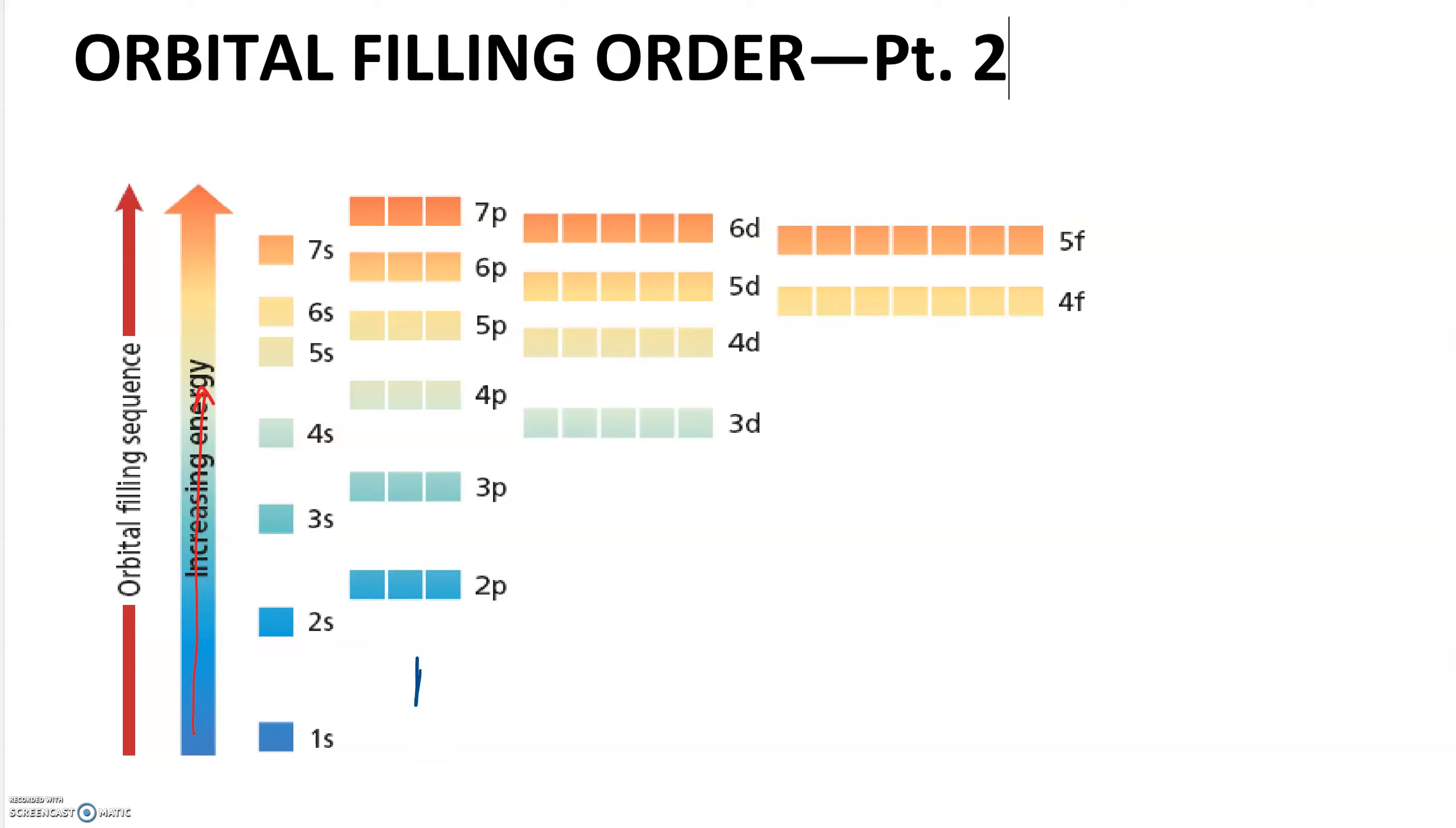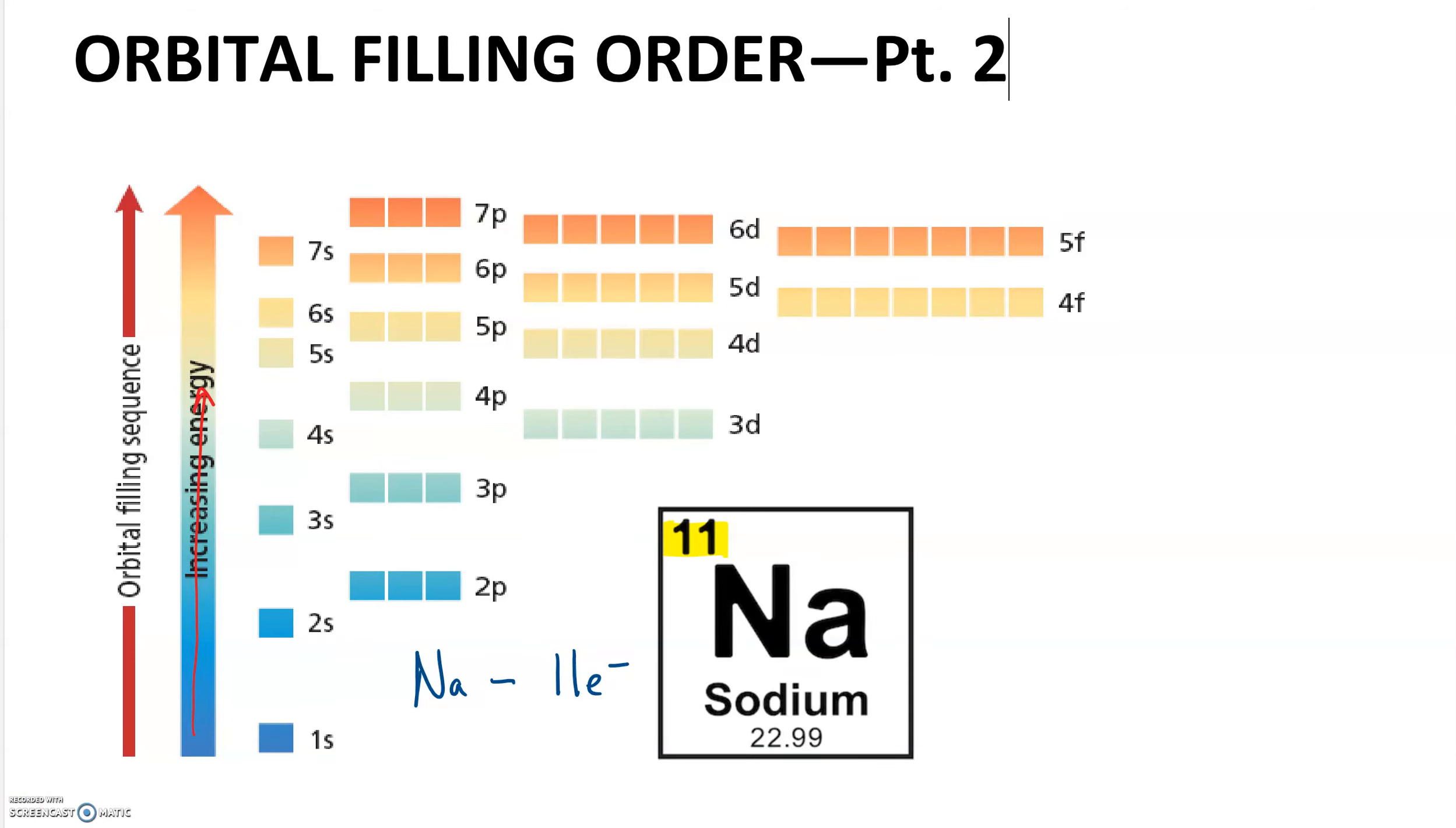Each of these represents an orbital and they are on this increasing energy vertical graph. So anything that is higher up is higher in energy. When we are filling the number of electrons that an element has, say for example sodium, we know that sodium has 11 electrons. If you're wondering where I got that from, it comes right from the fact that sodium has an atomic number of 11.